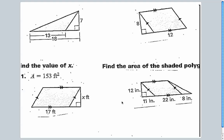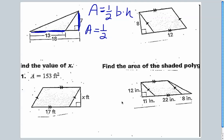First one — we have a triangle. The formula for a triangle is: area equals one-half base times the height. The base of the triangle, highlighted in blue, is 13. The height of the triangle is 7. So A equals one-half times 13 times 7. If you do the math on that, A equals 45.5. If we had units, it would be some sort of units squared because of the surface area.